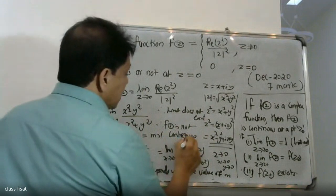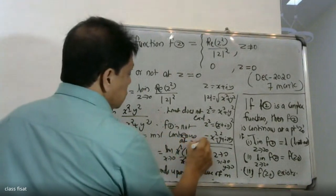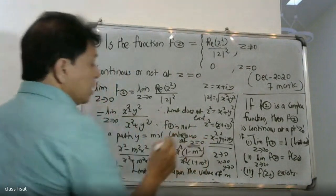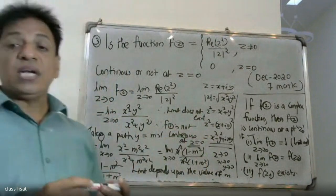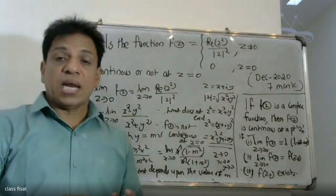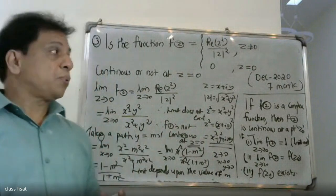Since the limit does not exist, the first condition for continuity is not satisfied. Therefore, f of z is not continuous at z equals zero.